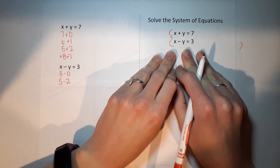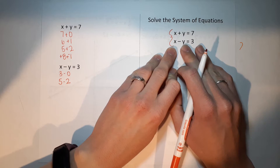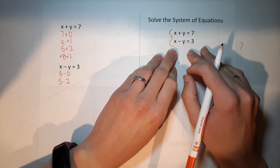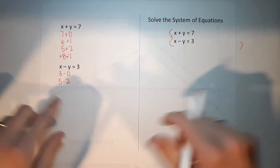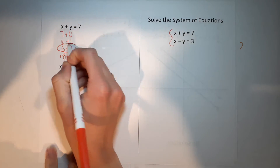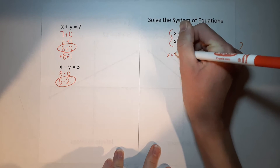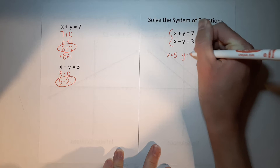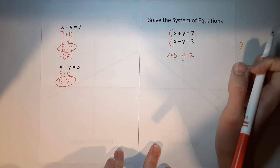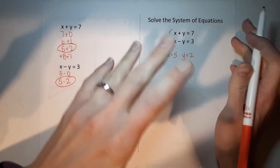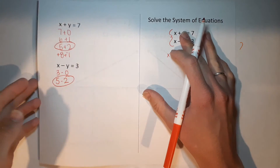When they give you a system, they're giving you more than one equation and they want to know the answer that works for x and y in both cases. With this simple set, we can figure out it's five and two — because five plus two is seven, and five minus two is three. That's what they're looking for: numbers that work for both.